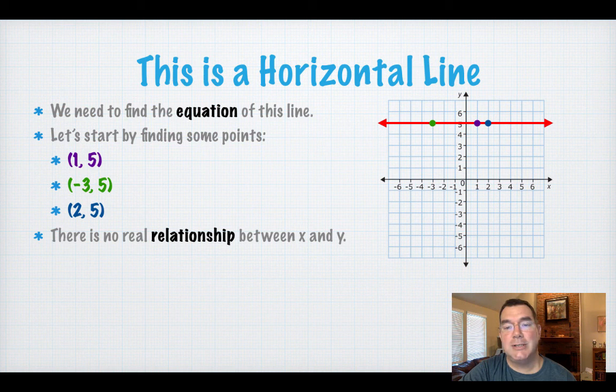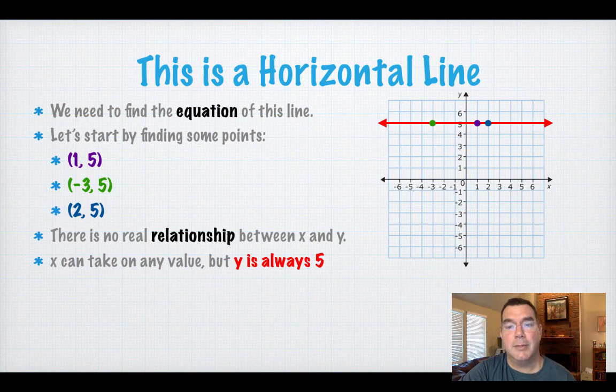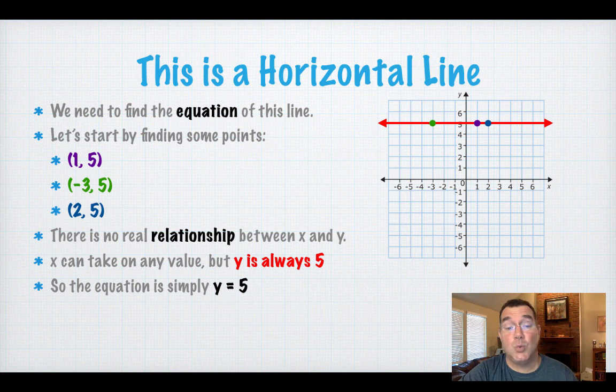As you can see, there's really no relationship per se between x and y. X is pretty much whatever you want it to be, but y is always 5. You could find more points on that line as well and you would see the same thing. The x is just some random number and y is 5.